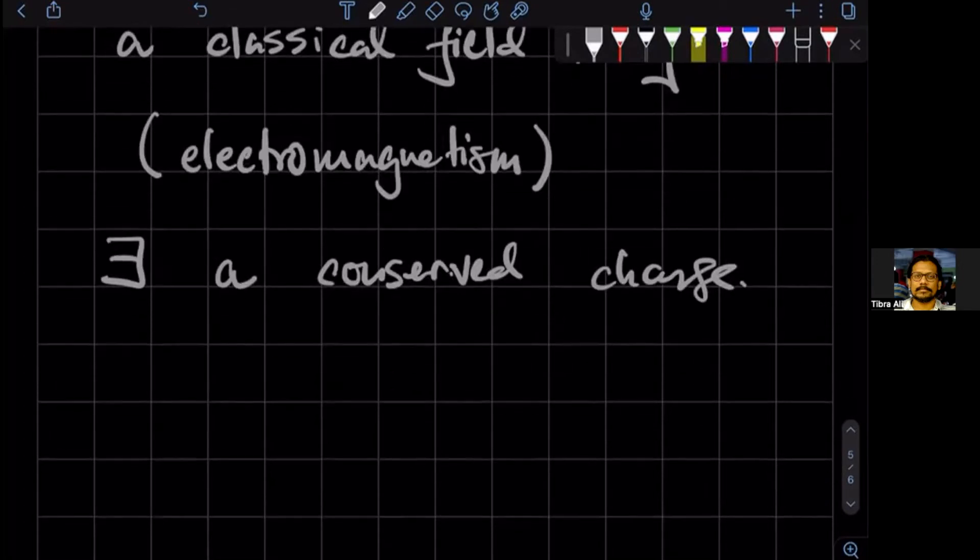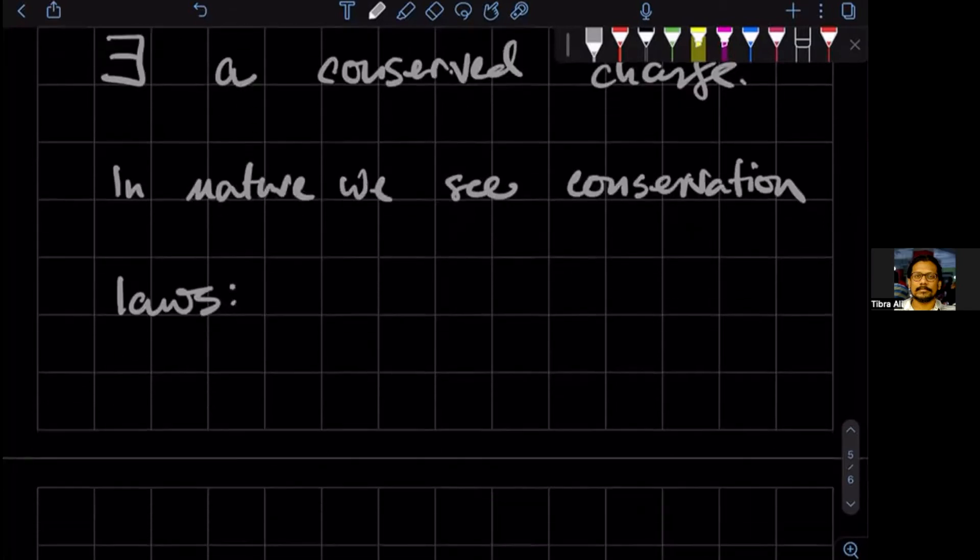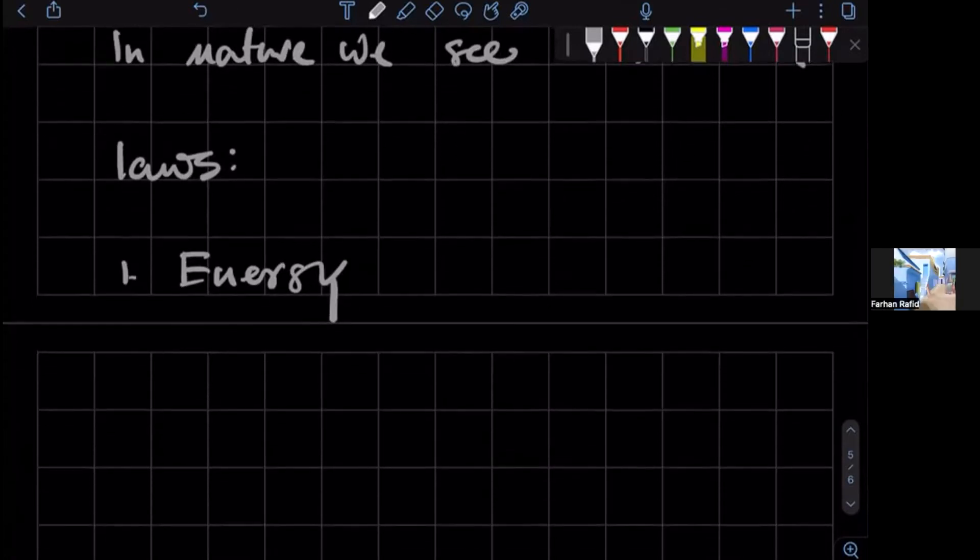Okay, so that theorem formalizes the fact that in nature we see conservation laws, right? Can you guys tell me some of the conservation laws? Energy. Conservation of energy. Momentum. Momentum. Electrical charge. Electric charge.